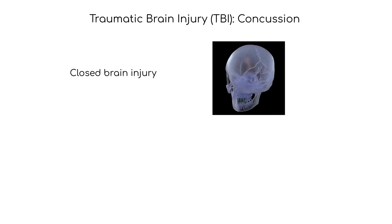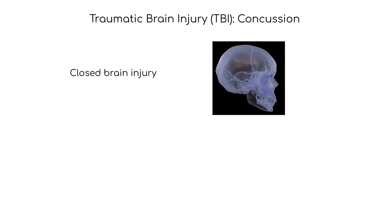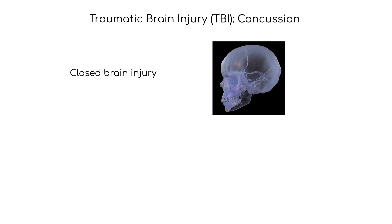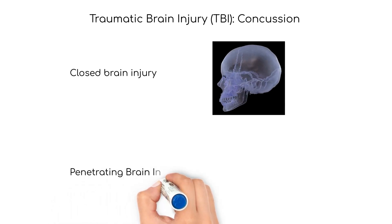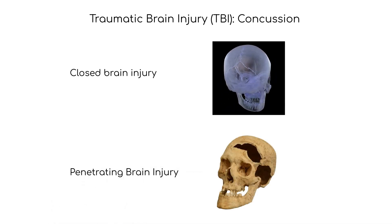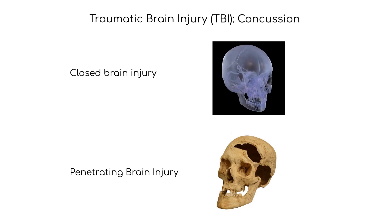Forces to the skull, such as violent movements, result in damage to brain tissue and blood vessels. Forces resulting in a break in the skull can cause a penetrating brain injury. Examples include objects that penetrate the skull, such as debris from an accident or bullets.